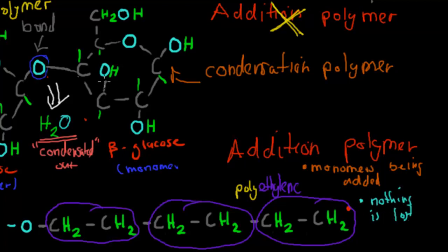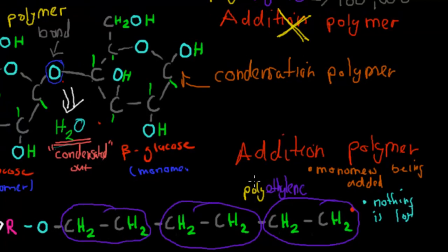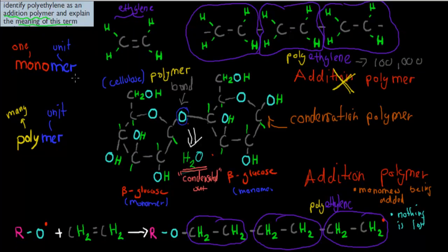Remember, when two glucose molecules came together for that condensation reaction, it was not an addition polymer because even though they added together, we also lost a water molecule — so it's a condensation polymer, not an addition polymer. Whereas with polyethylene, we're just adding things together; no water molecule, nothing else is being lost, so it's just an addition polymer. To summarize: polyethylene is an addition polymer — ethylene is the monomer, and an addition polymer is formed when many monomers bind together into a chain with only things being added and nothing lost.